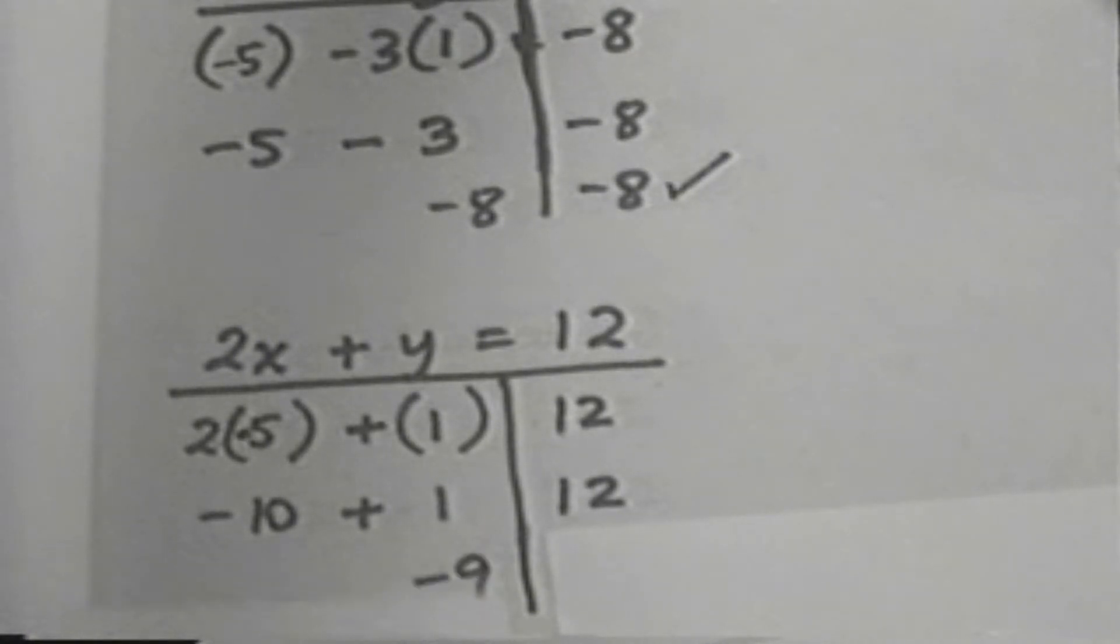Negative 10 plus 1 is negative 9. On the right, we have 12. No, that does not work. And so, negative 5, 1 is not a solution of our system.